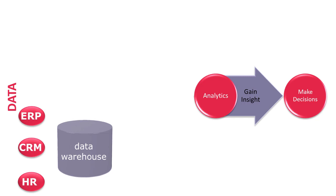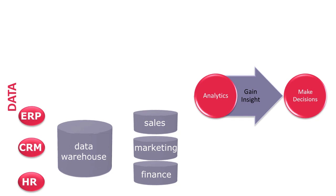Despite being designed for analytics, data warehouses have some shortcomings, and in many cases we need to introduce a further copy, or copies, of the data in the form of data marts. Data marts have two advantages. Firstly, they contain a subset of data for specific sets of users — for example, sales, marketing or finance — meaning business analysts can have their own copy of the data to safely experiment with; they cannot inadvertently damage the source data, as marts only contain copies. The second advantage is that data marts can run queries very fast, and even if many queries are run, it won't impact other departments, who have their own marts.